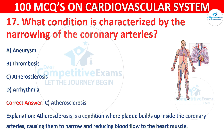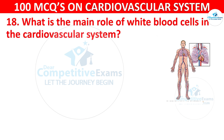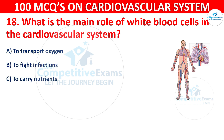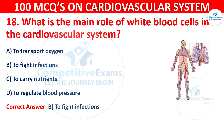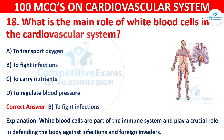Q18. What is the main role of white blood cells in the cardiovascular system? Options are: to transport oxygen, to fight infections, to carry nutrients, or to regulate blood pressure. The correct answer is B — to fight infections. White blood cells are part of the immune system and play a crucial role in defending the body against infections and foreign invaders.